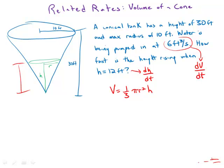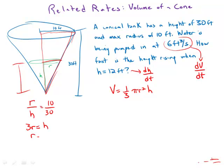Instead, we'd like to express r in terms of h. People often don't realize you can enormously simplify working with a cone by thinking in terms of proportional triangles. We have two similar triangles, so r over h equals the total radius 10 over the total height 30. Cross-multiplying gives us 3r equals h, or r equals h over 3.